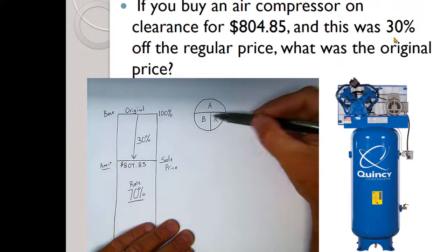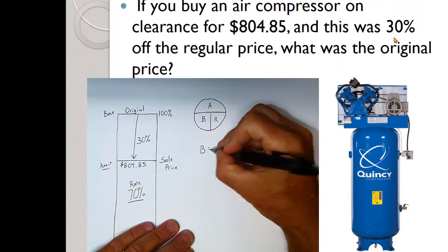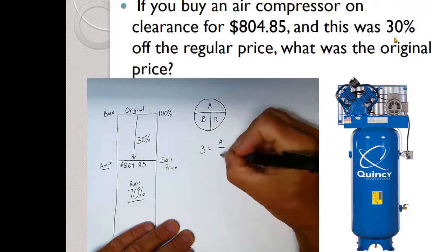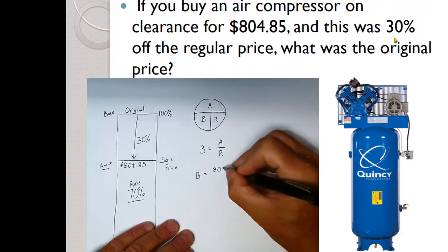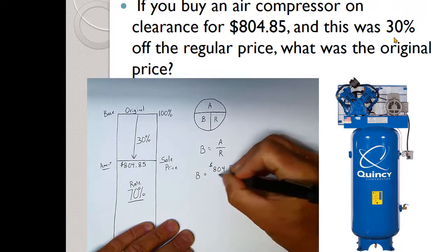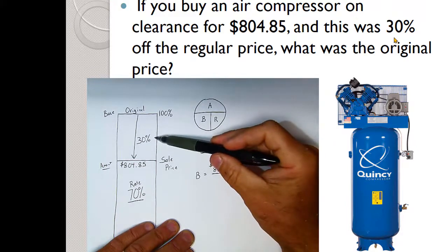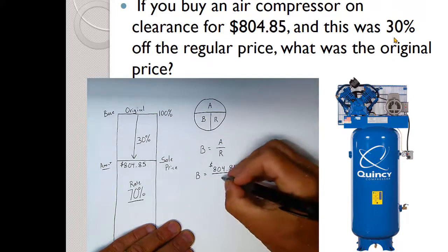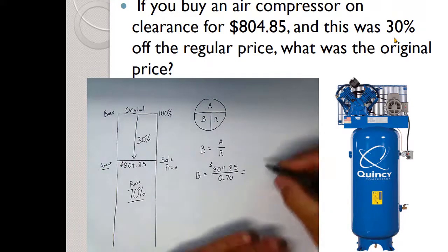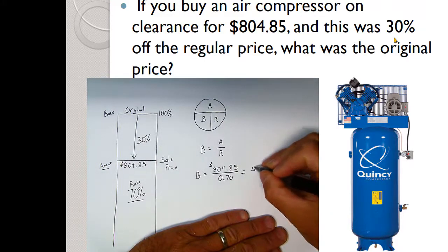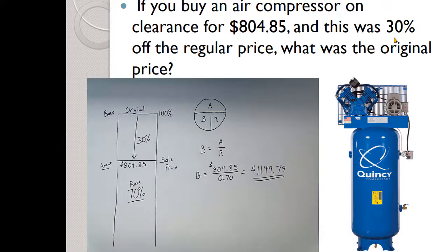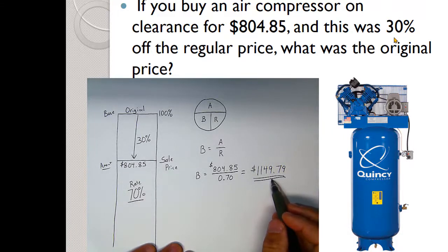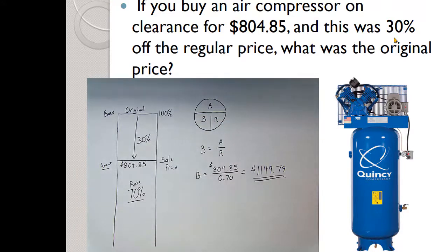When the base is unknown, we find it by dividing amount by rate: $804.85 ÷ 0.70 = $1,149.79. That's the original price. We could verify this by taking 30% off $1,149.79 and confirming we get $804.85. Anytime your base is unknown, be very careful about how you choose your rate.